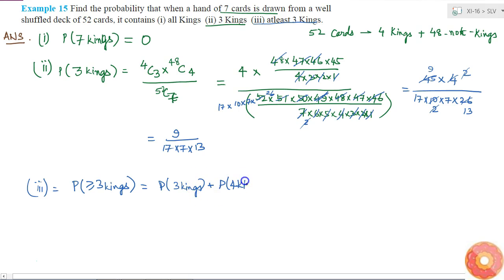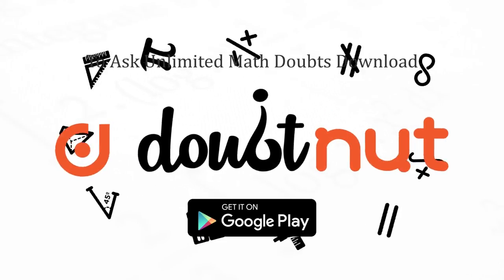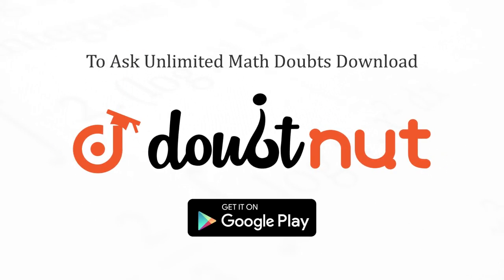Which will be equal to 4C3 into 48C4 plus 4C4 into 48C3 divided by 52C7. So these are my final answers.